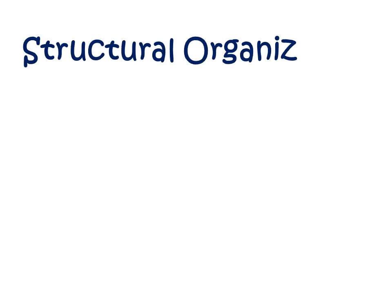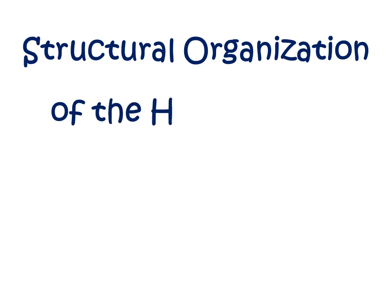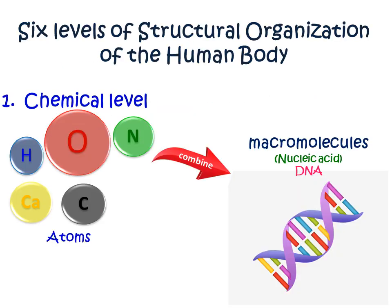There are six levels of structural organization of the human body. In order to understand and predict the body's responses to stimuli — such as how radiation interacts in our body — we begin to look at its most basic level and the whole structural organization of the human body. The first level is the chemical level of organization.